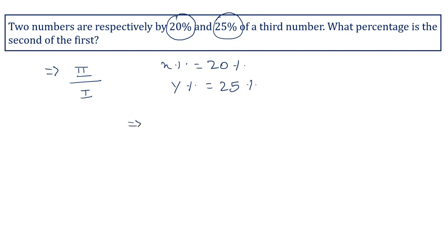So I will be using the formula that is second compared with the first: y upon x into 100%. Now y is 25 upon x is 20 into 100. The zeros cancel, 2 and 20 give 10, so 5 into 25 is 125%. So 125% is the second of the first.